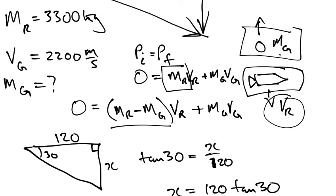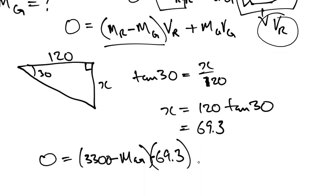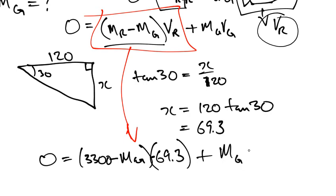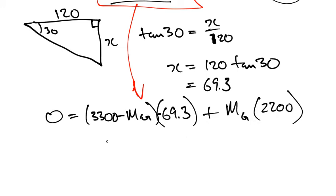This guy's going up and this guy's going down. So we have this term, and then we add mass of the gas times the velocity of the gas, which is 2200. Now we have one equation and one unknown. If you solve this, you end up with the mass of the gas being about 100.7 kilograms.